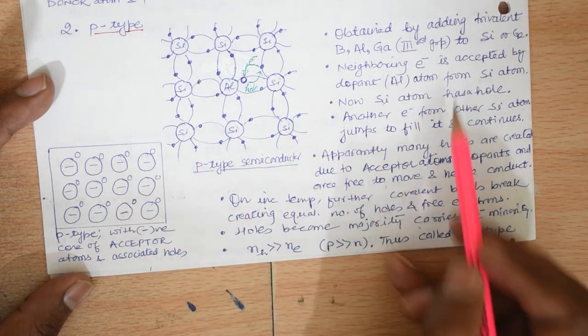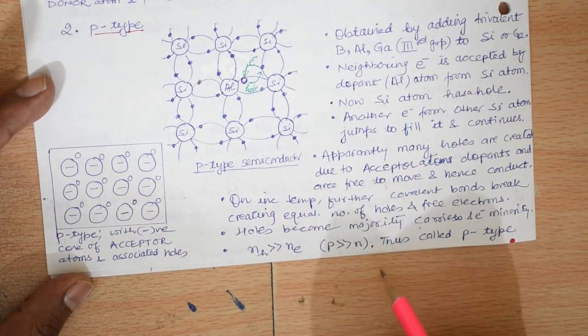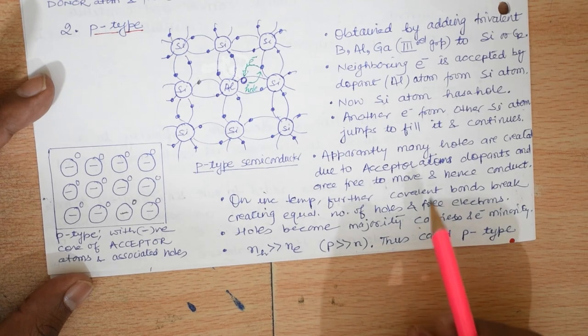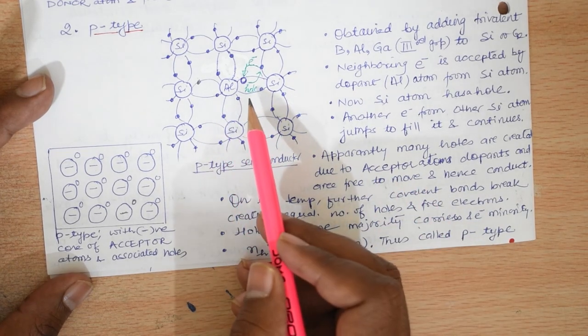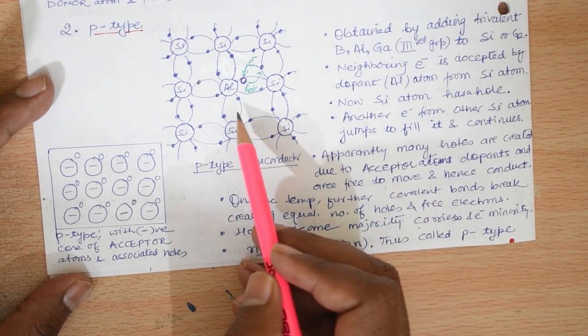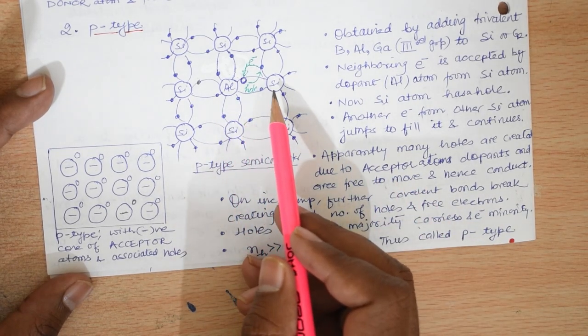In a P-type semiconductor, the majority charge carriers are holes and the minority charge carriers are electrons.